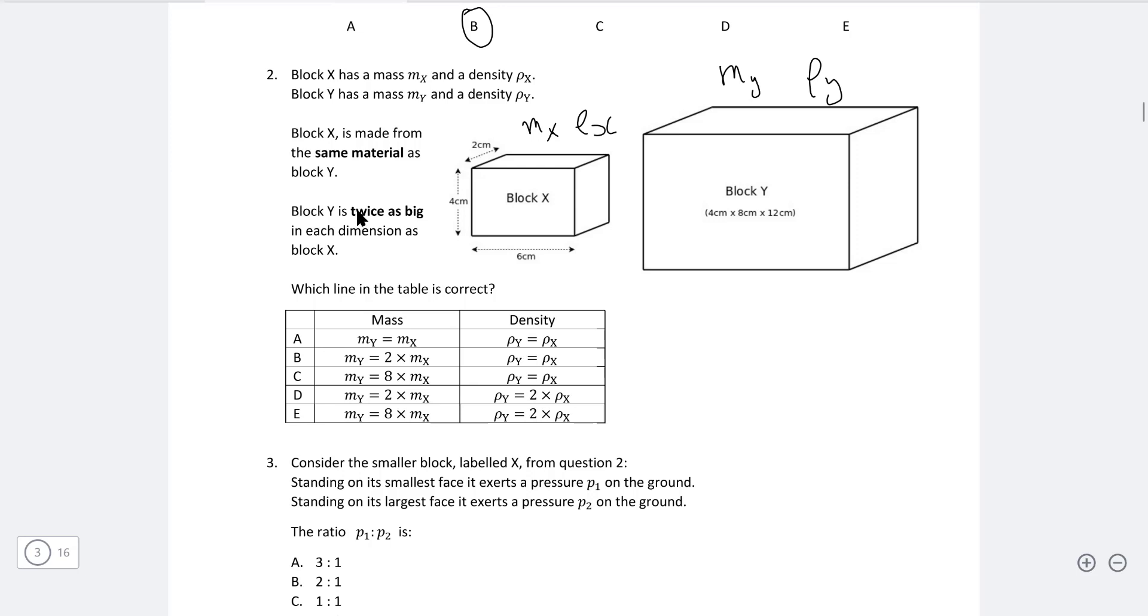Block Y is twice as big in each dimension as block X. Which line of the table is correct? Well, they're going to have the same density first of all because they're made from the same material. So the correct answer will either be A, B or C.